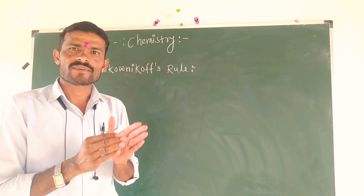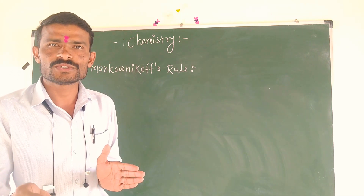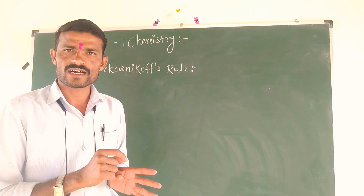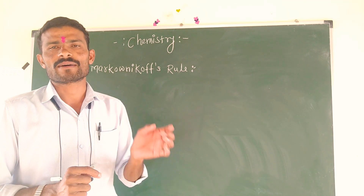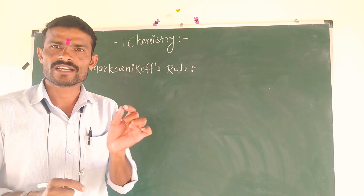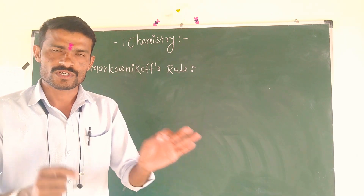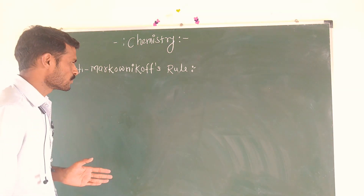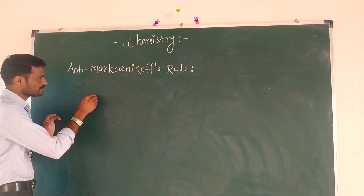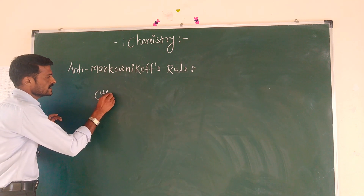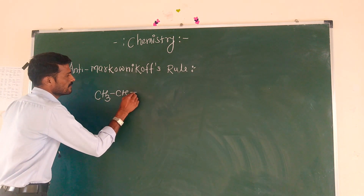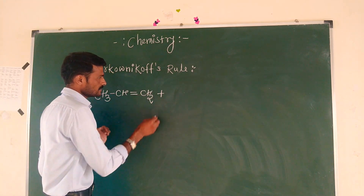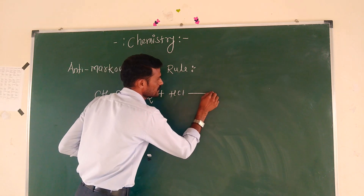The Markovnikov's Rule gives the major product. For example: CH3CH=CH2 plus HCN gives the Markovnikov product.